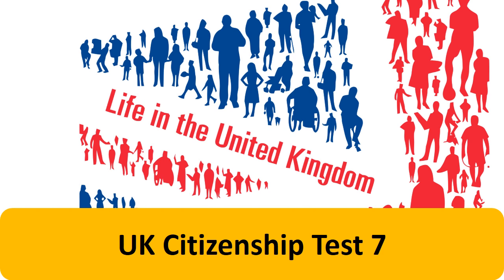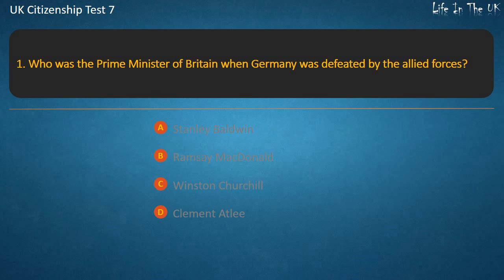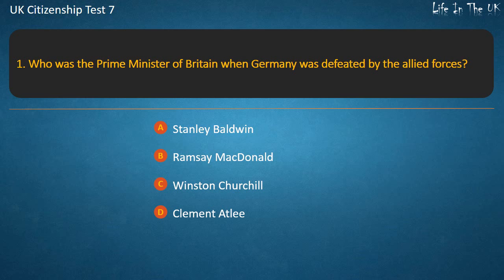UK Citizenship Test 7. Question 1: Who was the Prime Minister of Britain when Germany was defeated by the Allied forces? Options: Stanley Baldwin, Ramsay MacDonald, Winston Churchill, Clement Attlee. Answer: Winston Churchill.